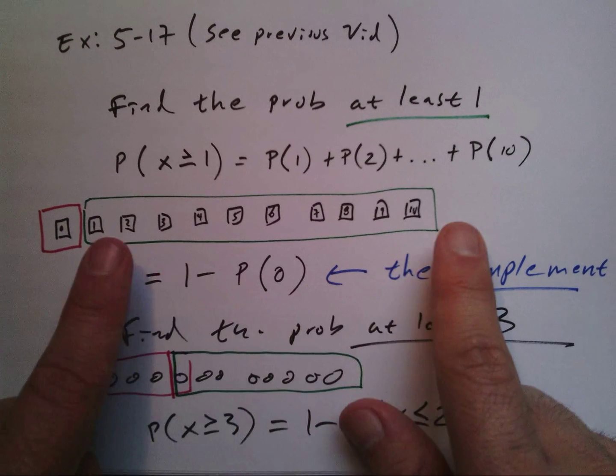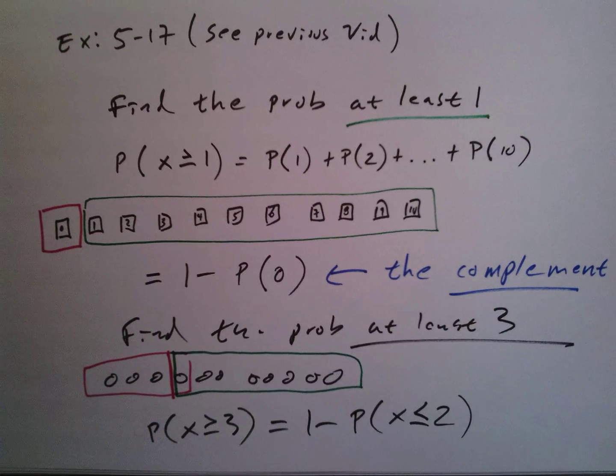And that failure is the complement set. In other words, one minus what we don't want gives us everything we do want.